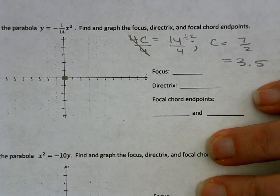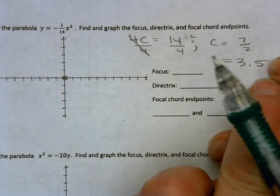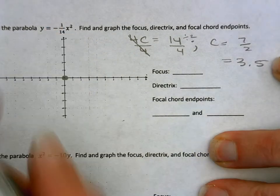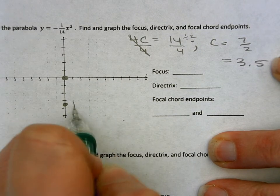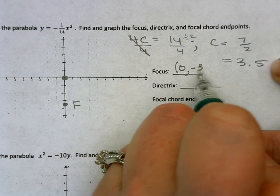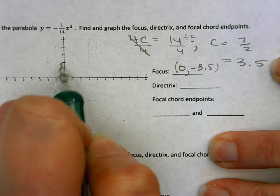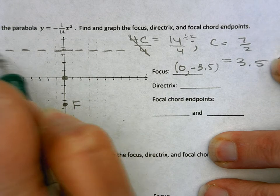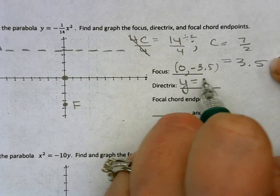So then I know my focus is 3.5 away from my vertex. My vertex is at (0,0). And then because I have a negative parabola, it's not going to be up here, but down here. So I'm going to go down 3.5. And that's my focus. So my focus is at (0, negative 3.5). And then my directrix, because of symmetry, will be up 3.5 as well. And that is a line. So y equals 3.5.